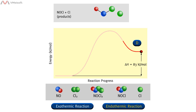The products of this reaction are nitrosyl chloride, NOCl, and chlorine atoms. The products are less stable than the reactants and have a higher potential energy. In this type of reaction, heat will be absorbed from the surroundings by the reacting mixture. The heat absorbed, or delta H, is 83 kilojoules per mole. This is an endothermic reaction.